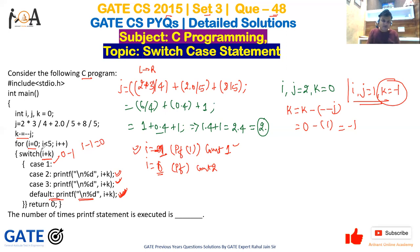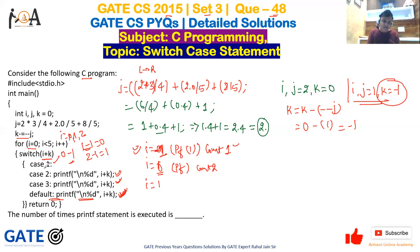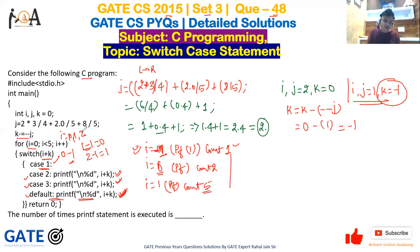For i = 2: switch(i + k) = 2 + (-1) = 1. Case 1 is matched but has no printf and no break, so case 2, case 3, and default all fall through and run. That's three printf statements. Count goes from 2 to 5.